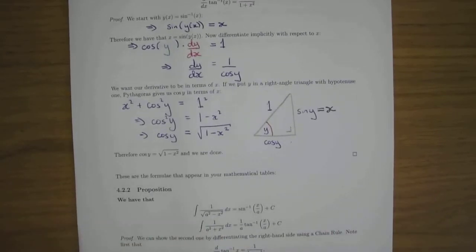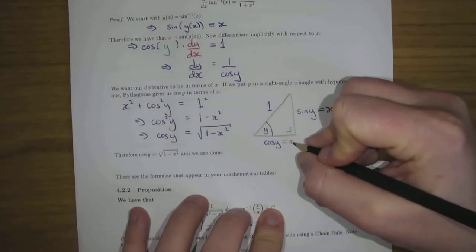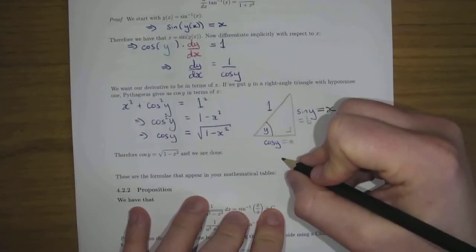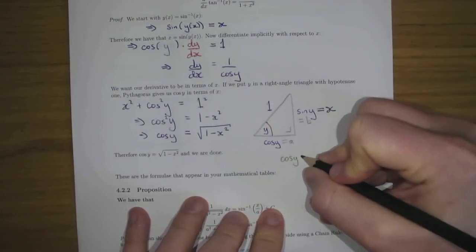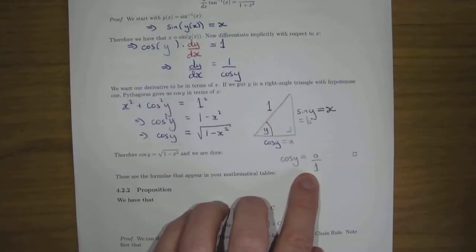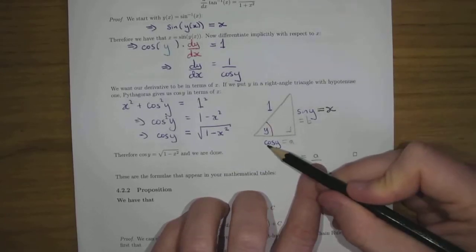If I said that this is equal to a and this was equal to b, we know that cos of y is a over one. And of course because that's adjacent over hypotenuse, and a over one is just a, so a must be cos of y. And similarly this must be sine of y.